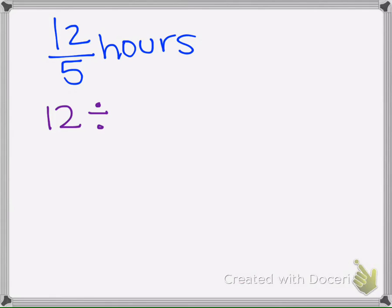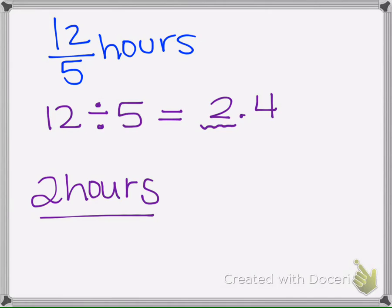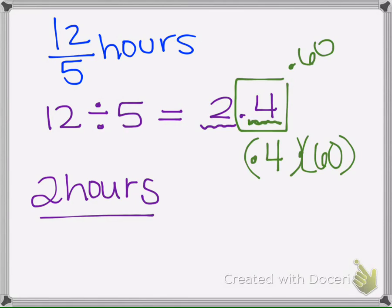Now another way to get that same answer is if we do twelve divided by five. If we do twelve divided by five, we get two point four. Well, the two represents two hours. And then if we multiply this by sixty, since it's not a whole other hour, it's only point four of an hour, if we do point four times sixty, we'll find out how many minutes. So take your calculator and enter point four times sixty, and you will get twenty-four minutes.